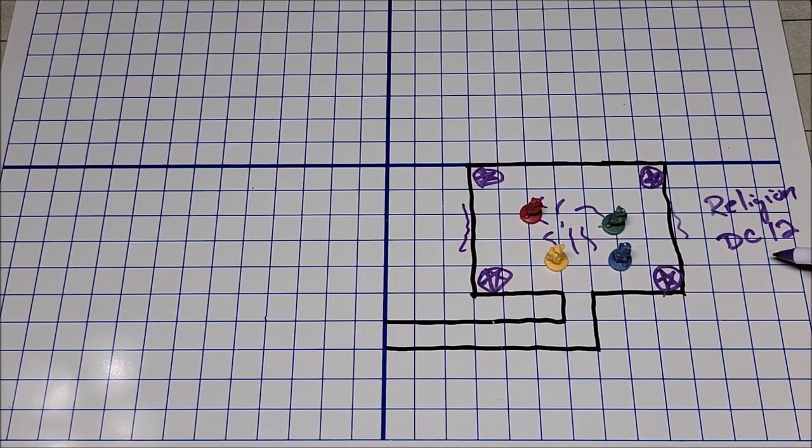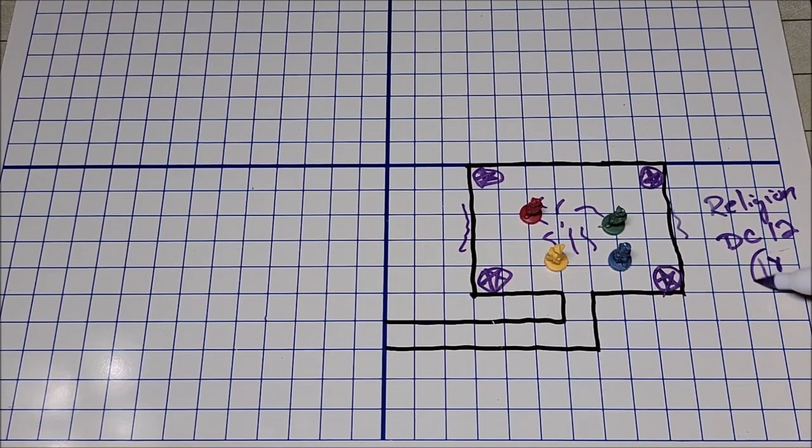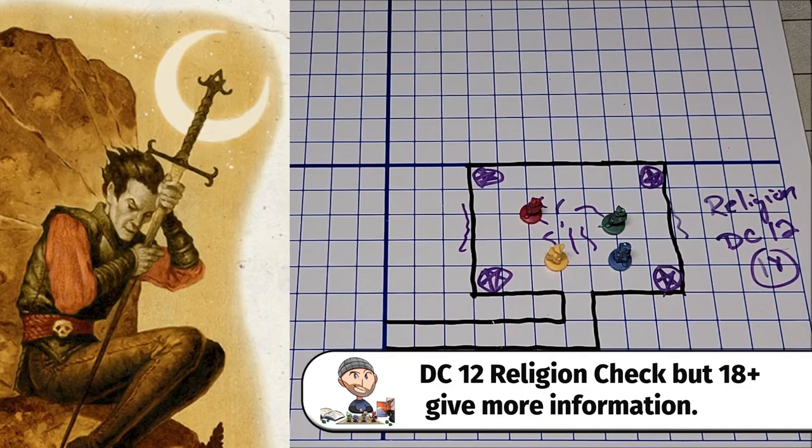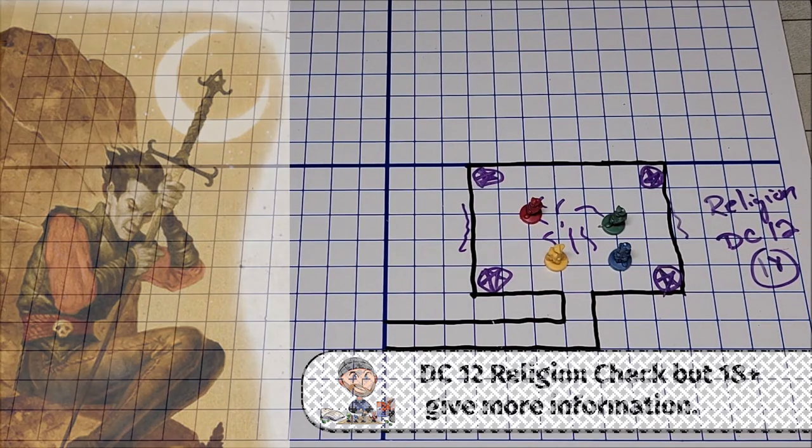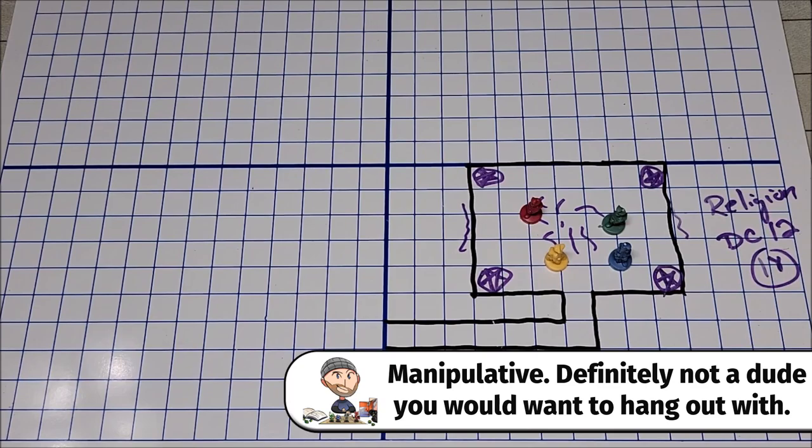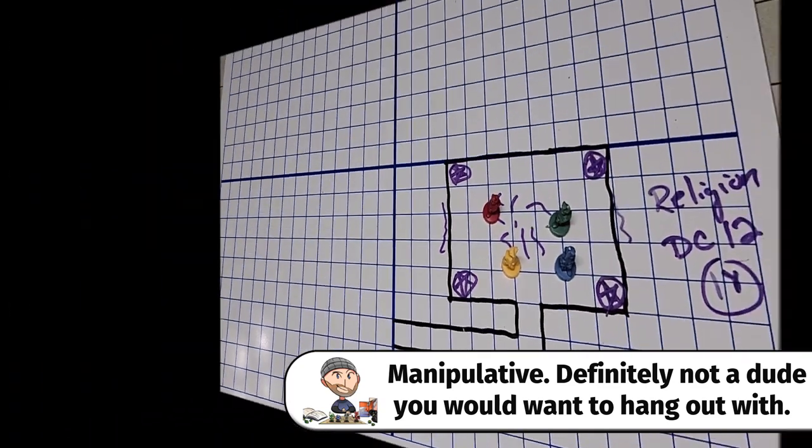If the players roll exceptionally well on this religion check, let's say an 18 or higher, then I'd probably give them just a little bit more information if they're not already familiar with the god. Such as in Cyric's case I would let them know that Cyric is a petty self-centered god that enjoyed manipulating individuals into ruining or ending their own lives. But again this section of the trap is totally up to you and the deity that you choose and the setting that you choose to put it in.